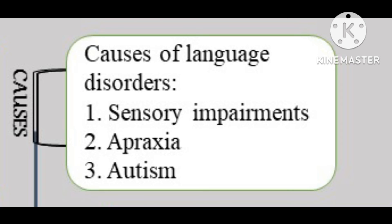Deafblindness is the combination of sight and hearing loss that affects a person's ability to communicate, access information, and navigate. It is also sometimes called dual-sensory loss or multi-sensory impairment. The second cause is apraxia, a nervous disorder that affects the motor system, causing muscles to be unable to receive brain commands properly. Apraxia generally affects the muscles around the face and mouth area, making it difficult for sufferers to perform movements such as whistling, licking their lips, sticking out their tongue, or even speaking.